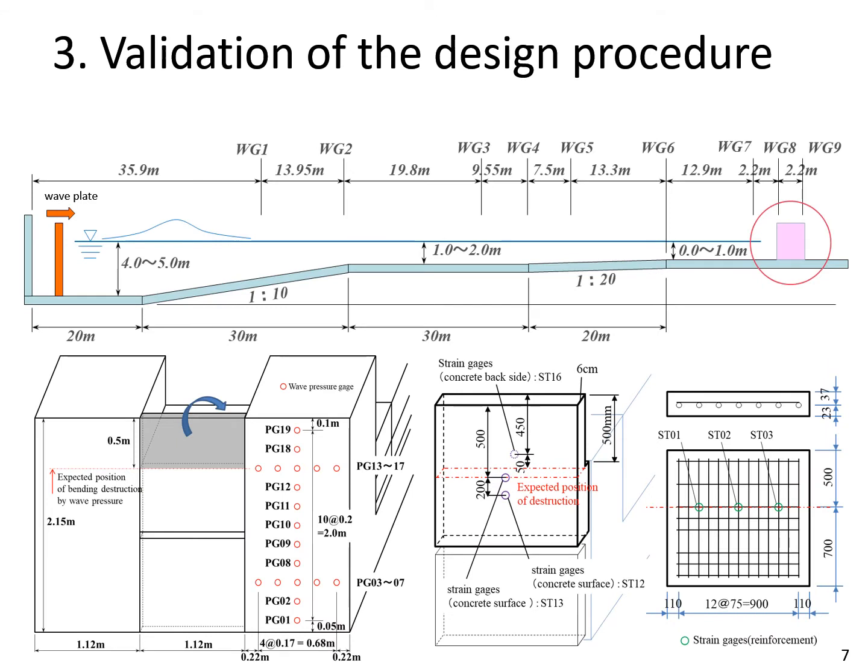To confirm the validity of the design procedure, we conducted hydraulic experiments and applied the results to it. From this slide, I'll explain our experiment. In order to eliminate the problem of similarity law, we conducted the experiments on a large scale. The flume is 184 meters long, 3.5 meters wide, and 12 meters deep.